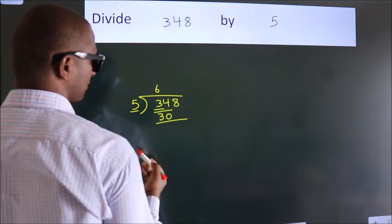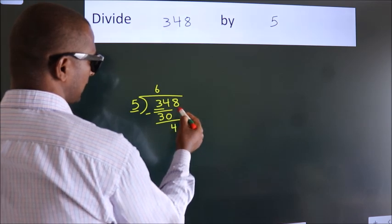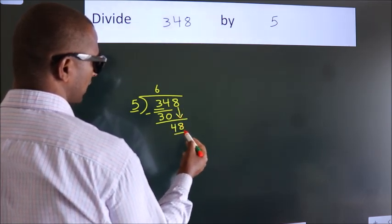Now, we should subtract. We get 4. After this, bring down the next number. So 8 down. So 48.